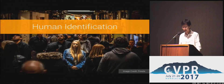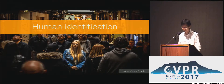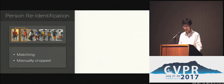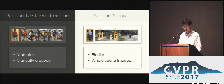Human identification aims at finding a person of interest from a gallery of photos. It is an important computer vision problem. Traditional research focused on person re-identification, that is matching the query photo with manually cropped person images. In this work, we address a more realistic setting called person search, which directly finds the target person from the whole scene images.